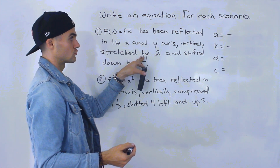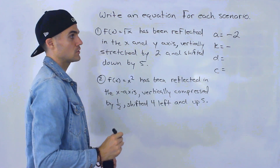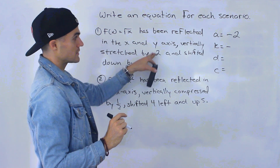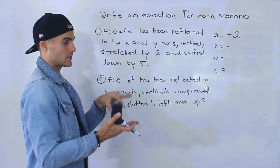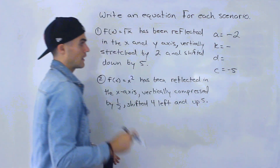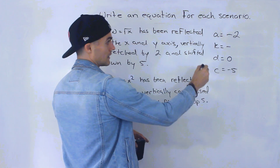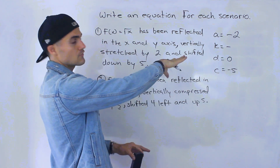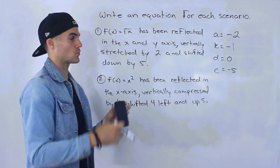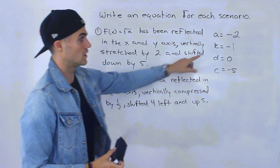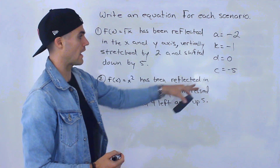A reflection in the x-axis means the a value is negative, and a reflection in the y-axis means the k value is negative. Vertically stretched by 2 means the a value gets a factor of 2, so the a value is negative 2 — stretched by 2 and reflected in x makes it negative 2. Shifted down 5 units means the c value is minus 5. There's no shift left or right, so d equals 0. There's no horizontal stretch or compression, but k must be negative, so k equals negative 1 — only a reflection in the y-axis, no horizontal stretch or compression.